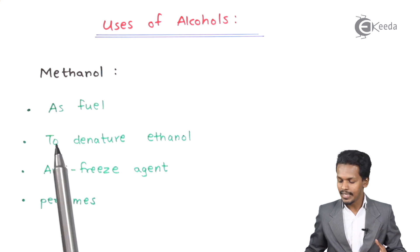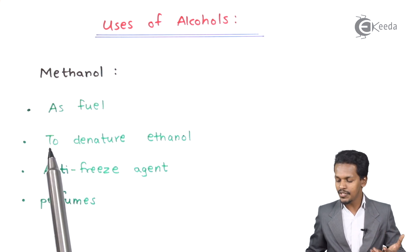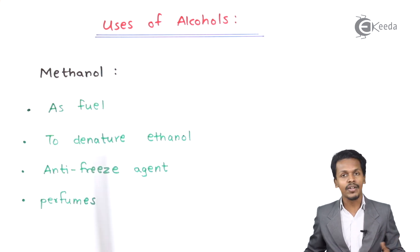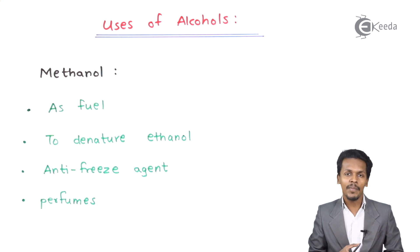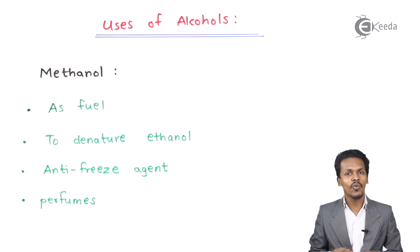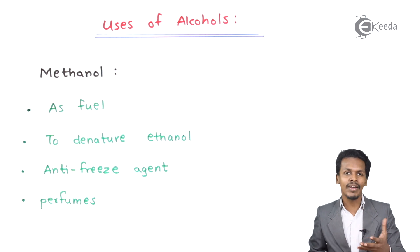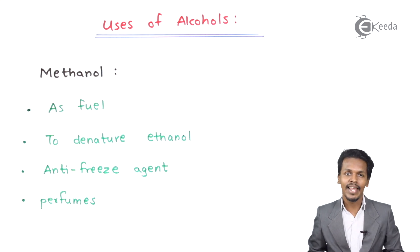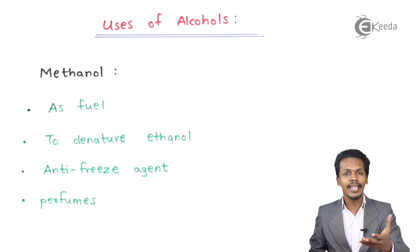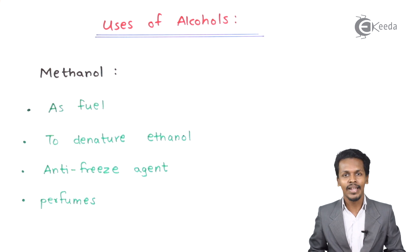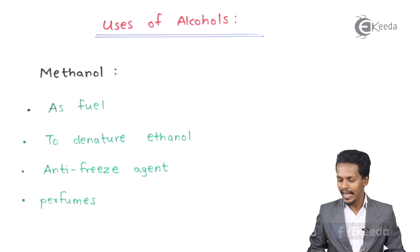The second use of methanol is that it is used to denature ethanol. Ethanol is basically used in beverages, so by adding methanol it denatures the ethanol, making it unfit to drink — and that is what it is being used for.